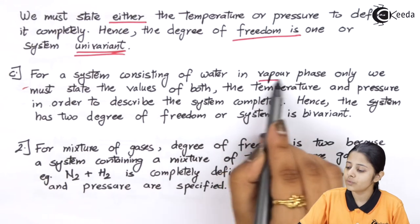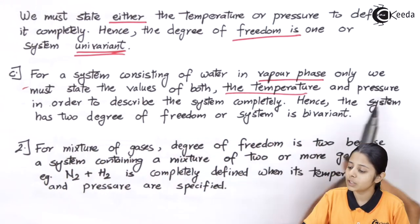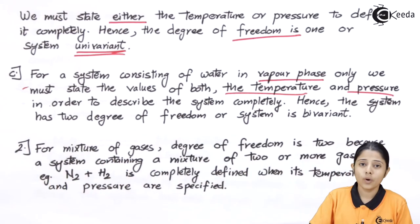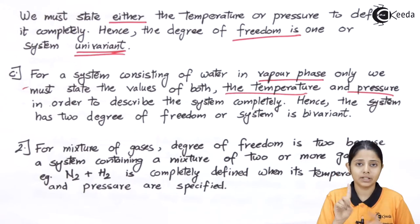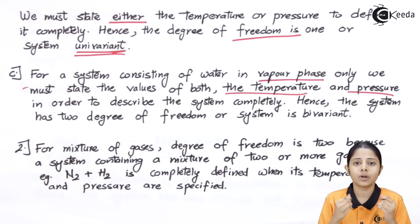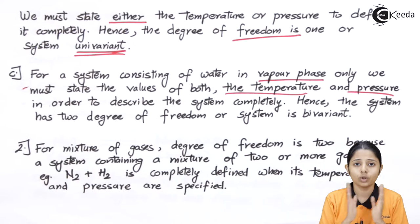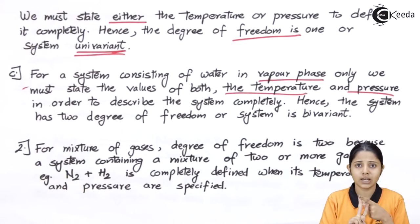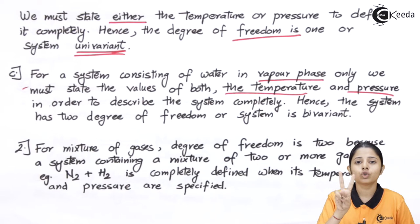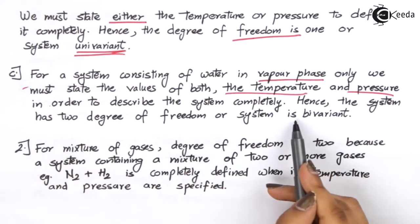For a system consisting of water in vapour phase only, we must take the values of both temperature and pressure in order to describe it completely. When water is in its gaseous form, there can be two variables: temperature and pressure, because pressure can be applied to gaseous material. Since we can vary both temperature and pressure, we have two variables. The first variable is temperature and the second variable is pressure. Because of these two variables, it will be known as bivariant, and the system has two degrees of freedom.